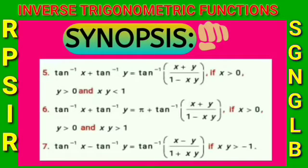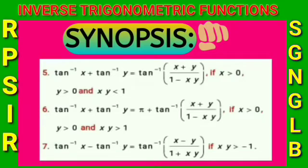Fifth point: tan⁻¹(x) + tan⁻¹(y) = tan⁻¹((x+y)/(1-xy)), where x > 0, y > 0, and xy < 1. Sixth point: tan⁻¹(x) + tan⁻¹(y) = π + tan⁻¹((x+y)/(1-xy)), where xy > 1. Seventh point: tan⁻¹(x) - tan⁻¹(y) = tan⁻¹((x-y)/(1+xy)), where xy > -1.